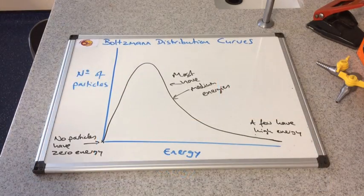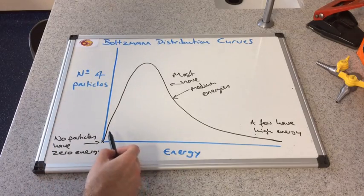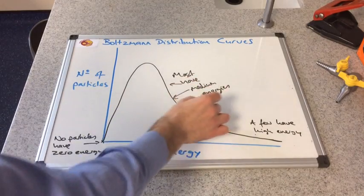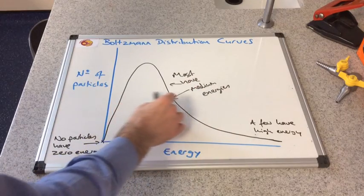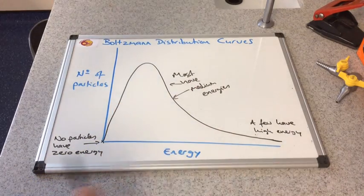I'm going to talk about this part of the curve very shortly. So I've just summarized that there: no particles have zero energy, most particles have this medium energy, and a few particles have high energy.